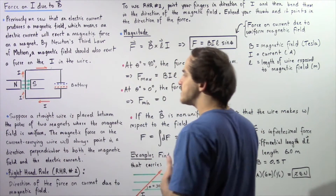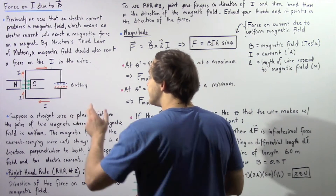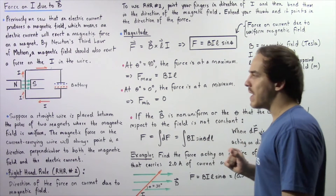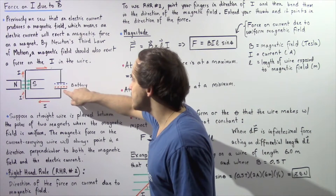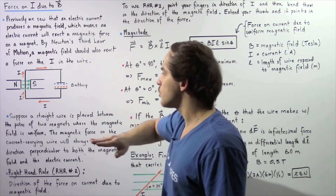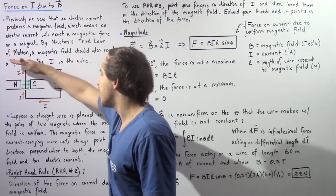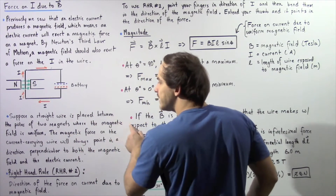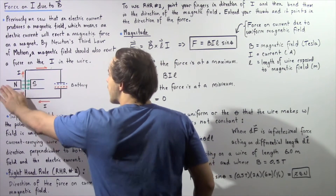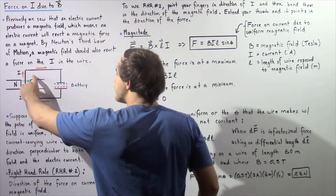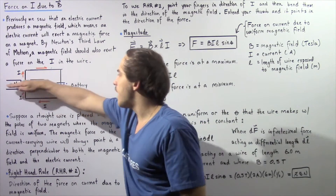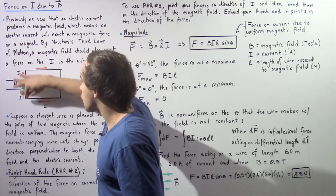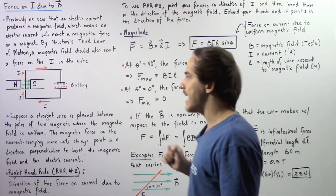So let's suppose we have the following experimental setup. We have a battery found inside a closed electric circuit. As a result of the electric potential difference in the battery, electric current will flow from the higher potential side to the lower potential side. Now suppose a straight wire is placed between the two poles of a magnet where the magnetic field is assumed to be uniform. We have our north pole, our south pole, and the magnetic field points in the positive direction along our x-axis. Notice the angle that our electric current makes with respect to our magnetic field is 90 degrees.